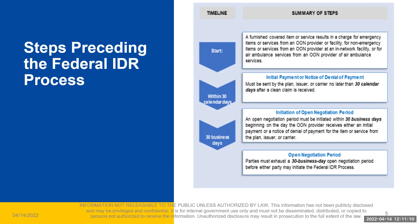The open negotiation notice must include: the date the items or services were furnished, corresponding service codes for the items or services, the initial payment amount or payment as applicable, any offer for the out-of-network rate, and contact information of the parties sending the open negotiation notice. These items should have been found in the payment or denial of payment by the plan.